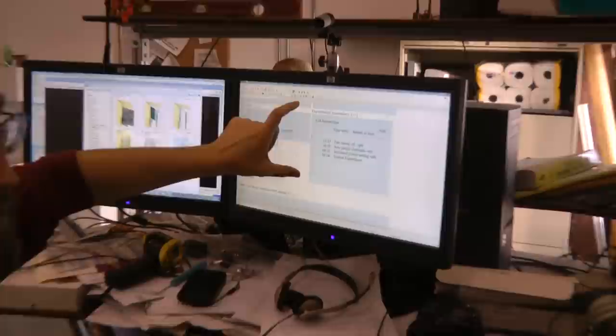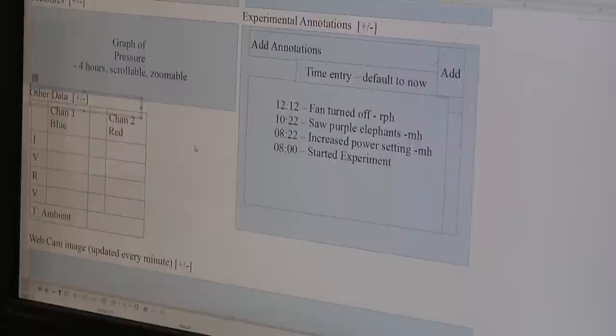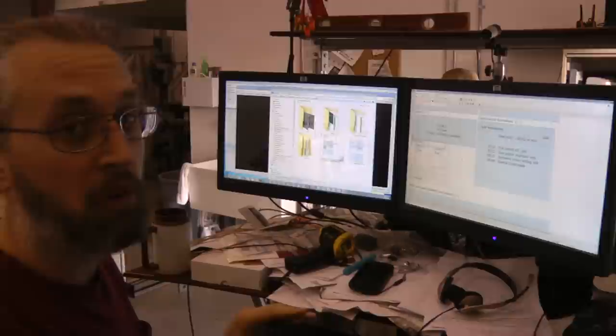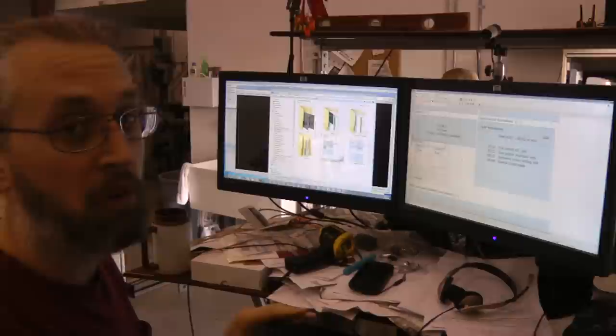Down below here is probably the most important part that we don't have in place yet, and that is experimental annotations. Any time we change anything in the cell or observe anything, this would be a good place, we need a good, convenient place to write it down and store it with the data.